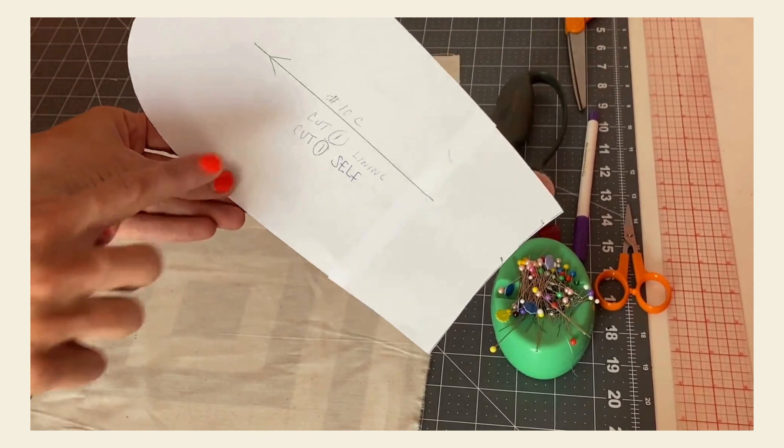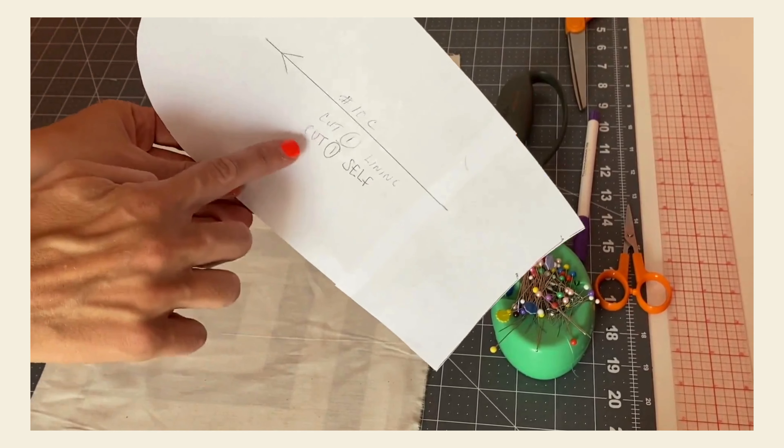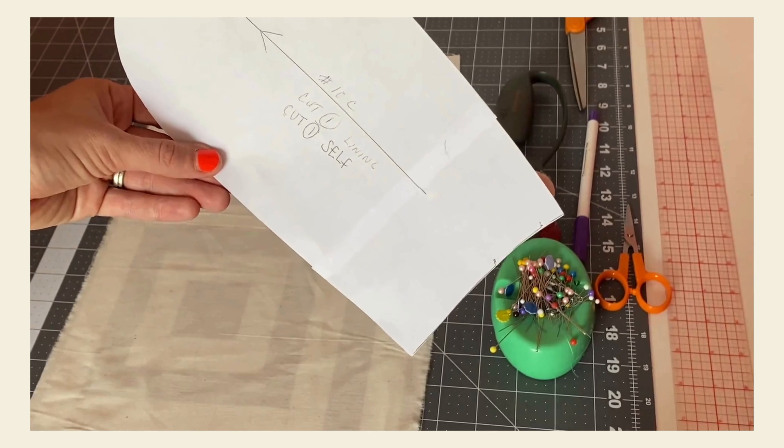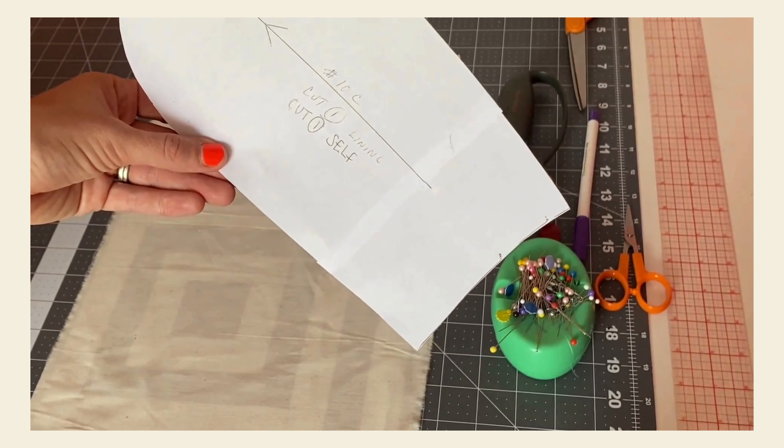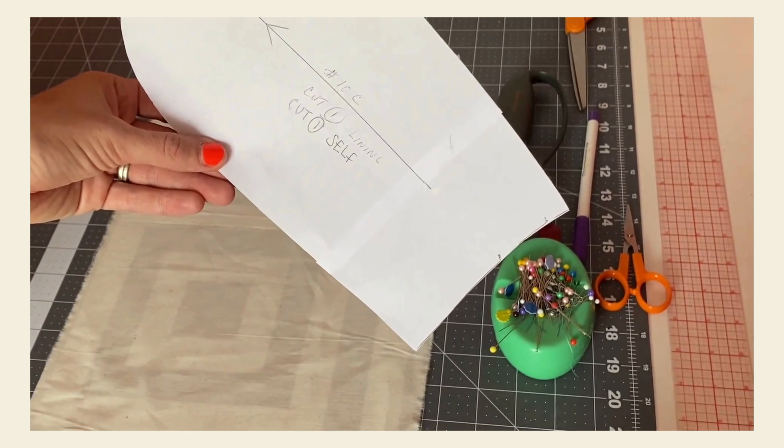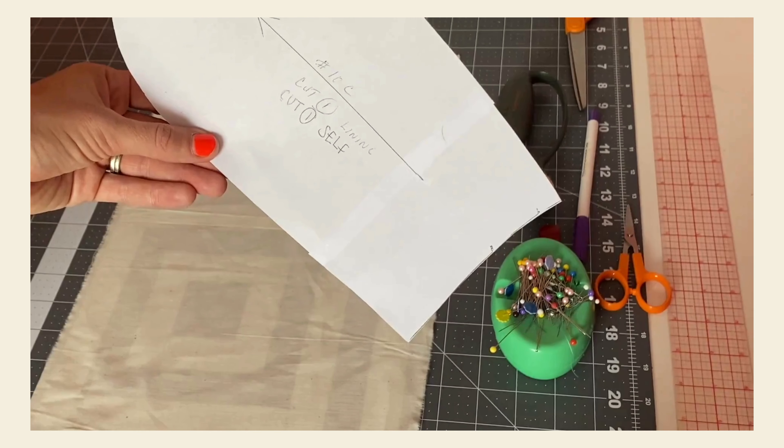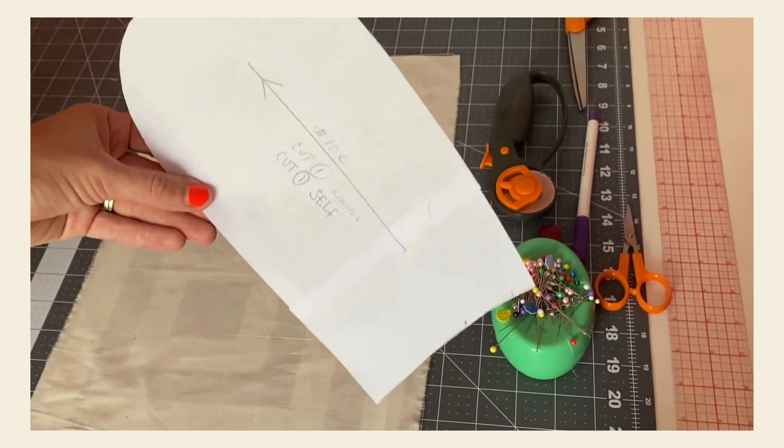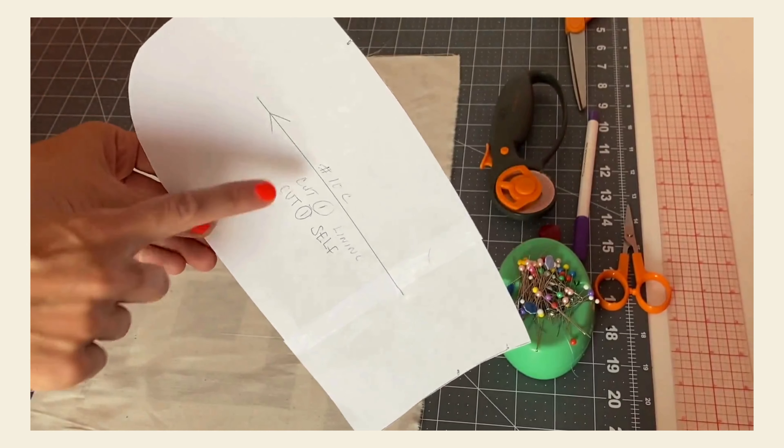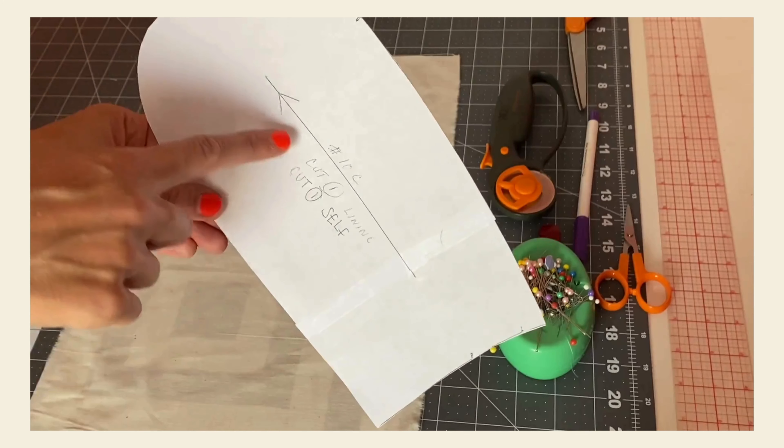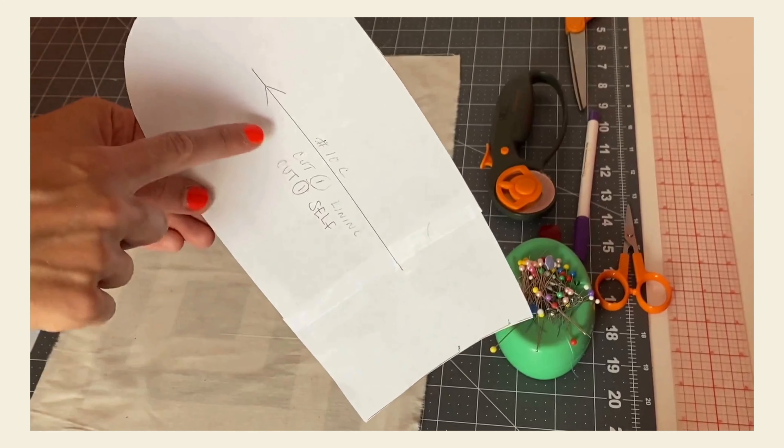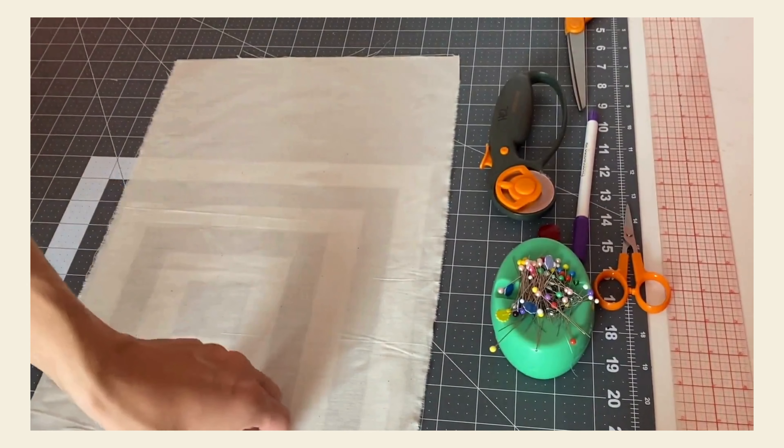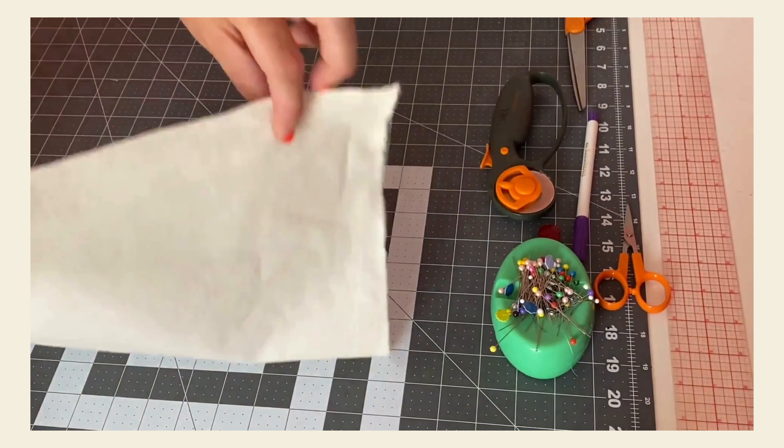We can read all of the instructions on the pattern piece. In this case, it says cut one lining and cut one self, but we're just going to cut one piece of it right now. Self means the right side of your primary fabric. So we're going to pretend that this muslin is the primary fabric. You'll also notice that there's an arrow on the pattern piece. That indicates the direction you should place the pattern piece on the fabric in relation to the grain line on the fabric.